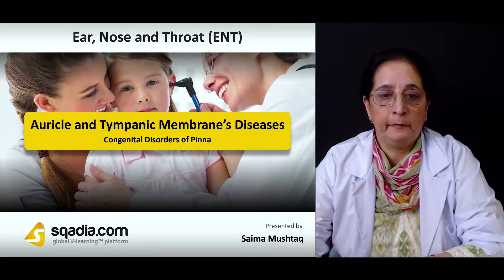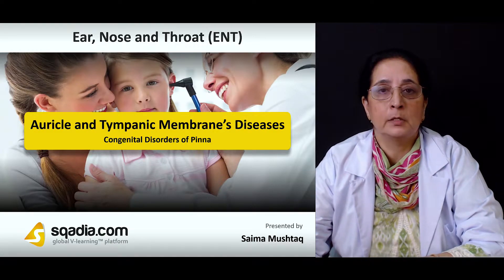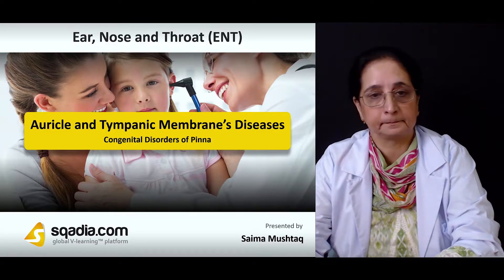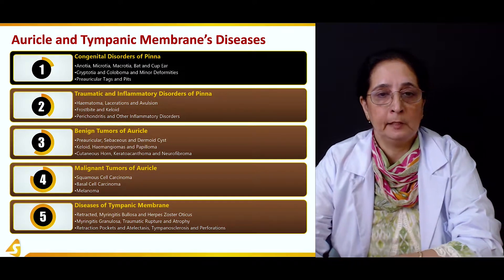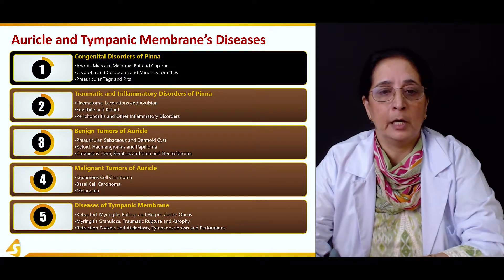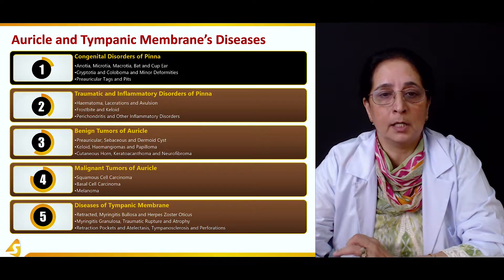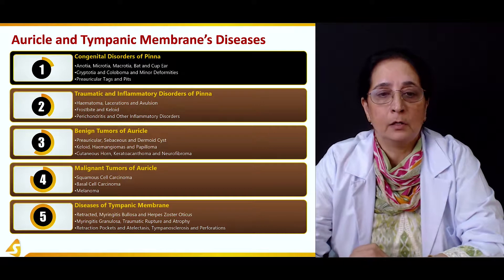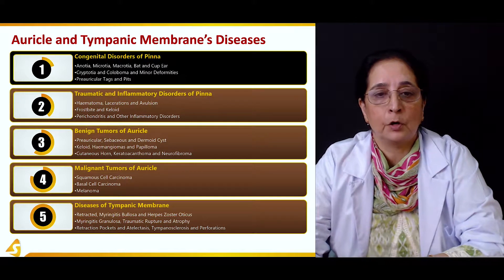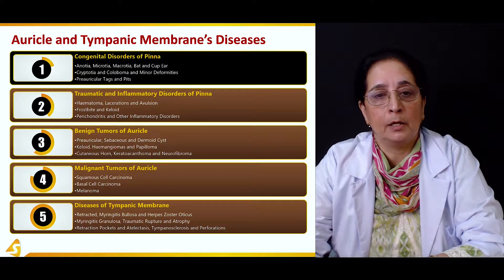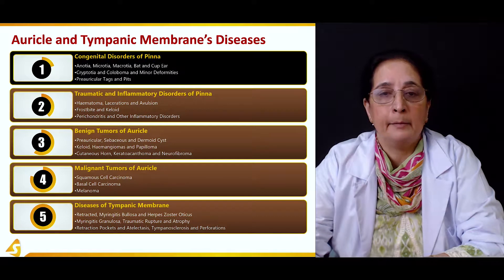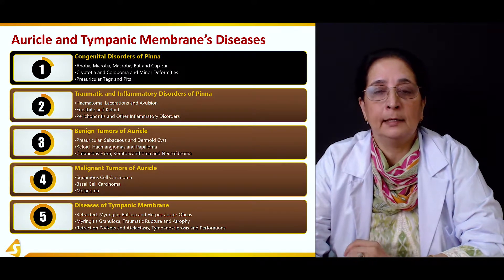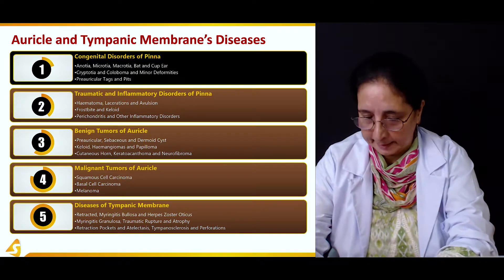In this section we will talk about some congenital disorders of pinna, including anotia, microtia, macrotia, bat and cup ear, and we will also talk about cryptotia, coloboma, minor deformities, preauricular tags and pits.